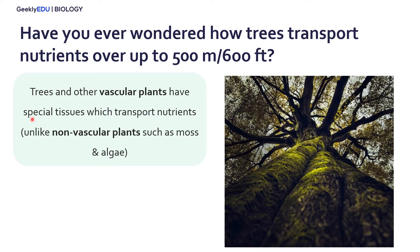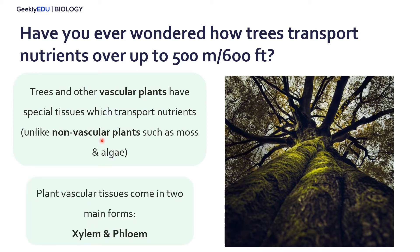This is unlike some other plants such as moss and algae, which are called non-vascular plants because they do not have these vascular tissues. Vascular plants have two main types of vascular tissues called xylem and phloem.